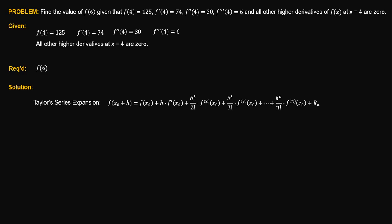In this case, x sub 0 is equal to 4, since this is the reference point where the first, second, and third derivatives are given, and the function value at this point is also given. Therefore, the quantity x sub 0 plus h is equal to 6, meaning the left side of the equation will be f of 6. Solving for h, we have h is equal to 2.